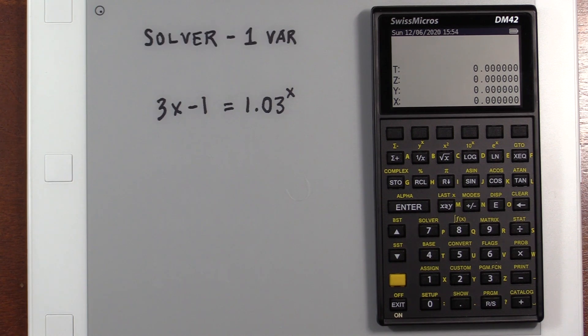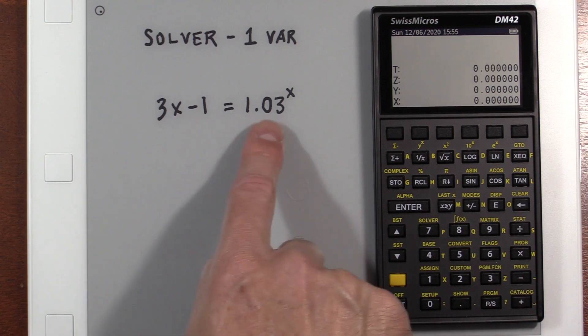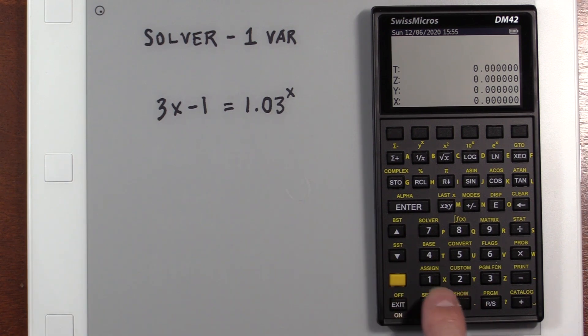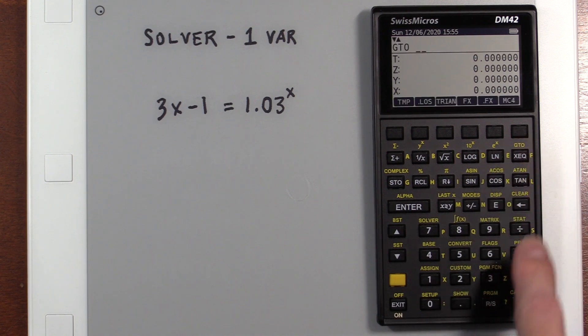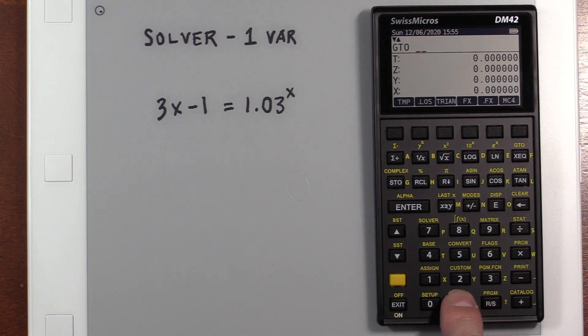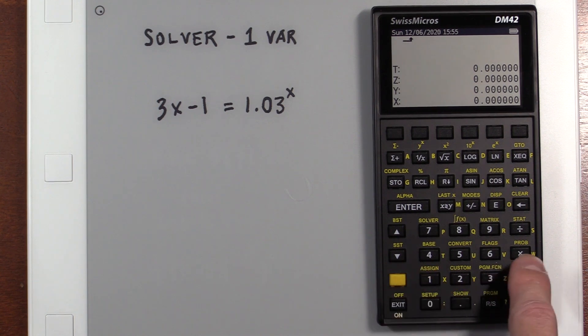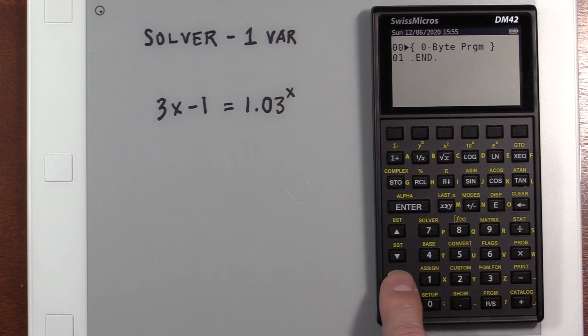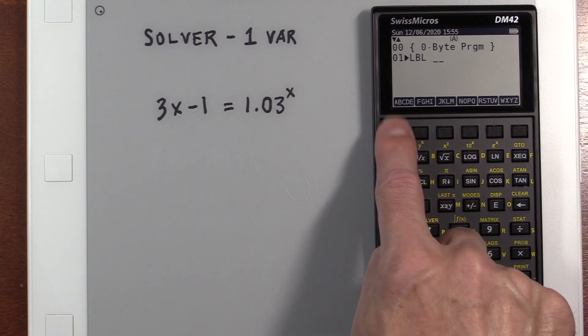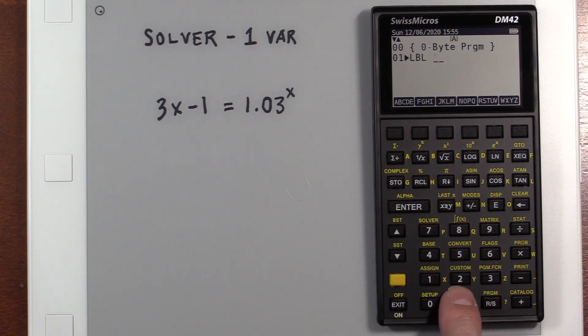Let's look at how we would use the solver, and we're going to solve this problem here. One thing about the solver on the DM42 is everything has to be on one side of the equation, equal to zero. So I'm going to take this, and we're going to bring this over. So we start the same way we would do it with a normal program, and go into the program, and then we bring up our functions. Let's label it.